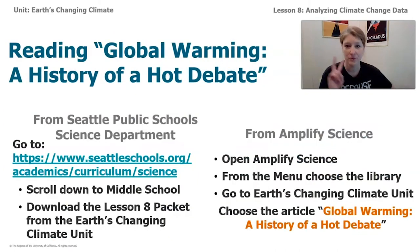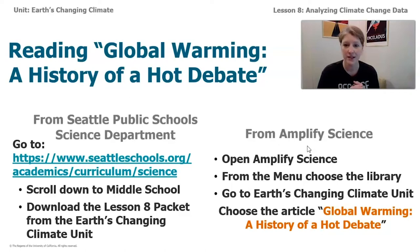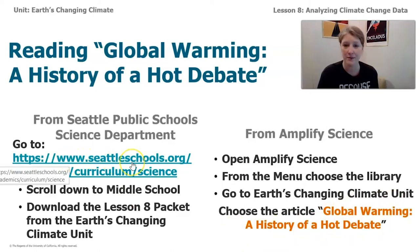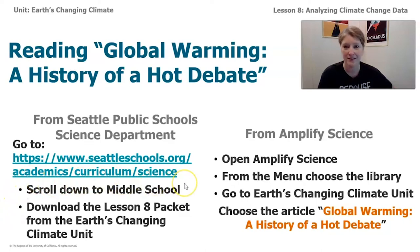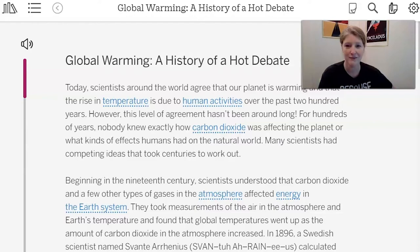We're going to read an article called 'Global Warming: A History of Hot Debate.' To get a copy, if you're a sixth grader in Seattle Schools, go to your Amplify account via Clever, open the library, go to Earth's Changing Climate unit, and choose the article. If you're not in Seattle Schools, go to seattleschools.org/academics/curriculum/science, scroll to middle school, and download the lesson eight packet for the Earth's Changing Climate unit.